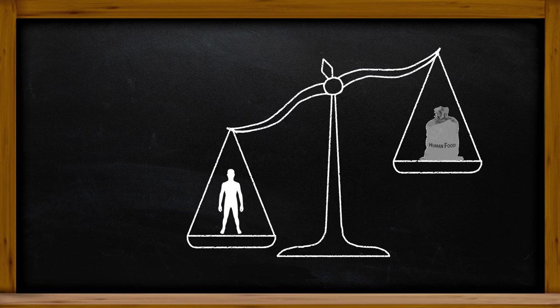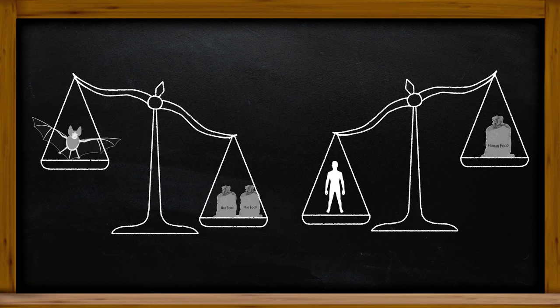So here you can see that the amount of energy that a bat produces is much higher relative to their weight, and that's something that would have to be addressed to make a body like that of a human able to fly.